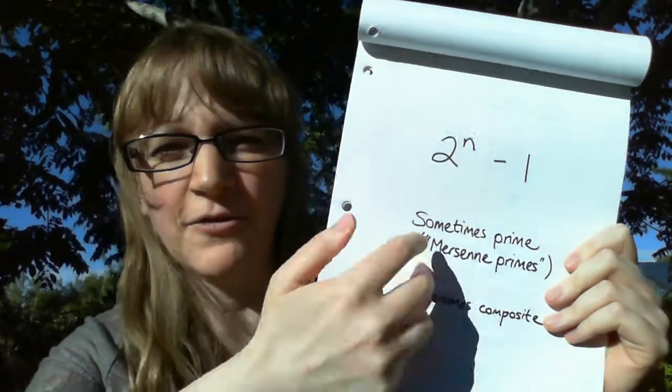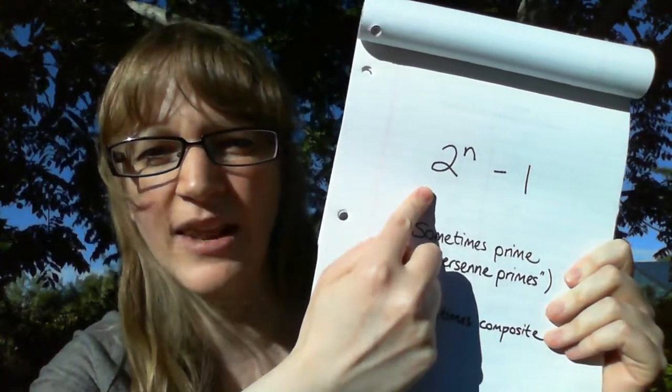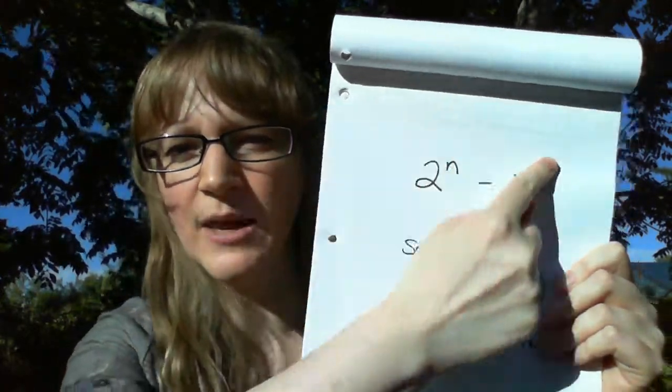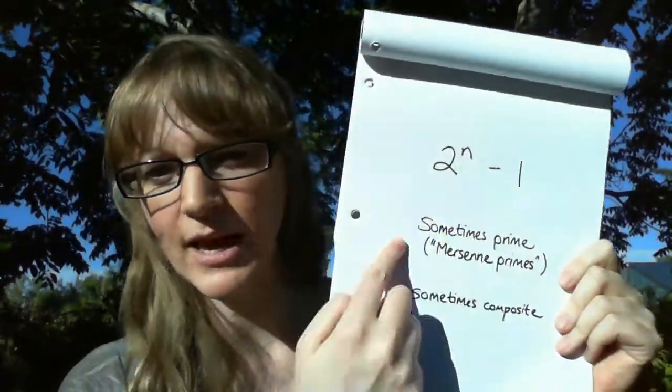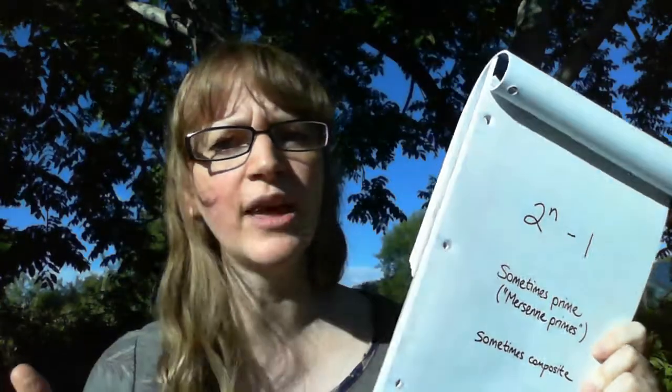So we're looking at numbers that are of the form one less than a power of two. Sometimes this will be prime and we call that a Mersenne prime. Sometimes this is composite and we'll just call that a Mersenne number. It's still a number, it's just not prime.